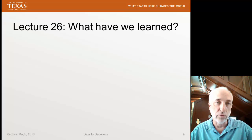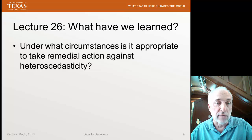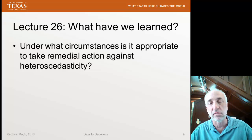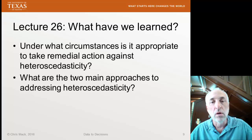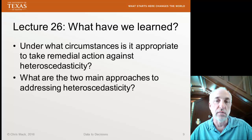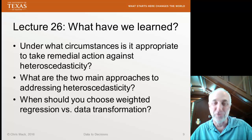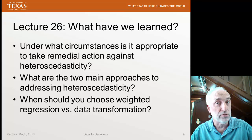What have we learned in lecture 26? As always, you should be able to quickly and easily answer these questions; if not, please go back and review the material. Under what circumstances is it appropriate to take remedial action against heteroscedasticity? You've looked at your data, suspected it might be there, done a test, and it says you can reject the null hypothesis that the variance is constant — under what circumstances is it appropriate to act? What are the two main approaches to addressing heteroscedasticity? The answer: the two main approaches are weighted regression and data transformation. When will you choose one or the other? Those are our questions from lecture 26. Until next time.